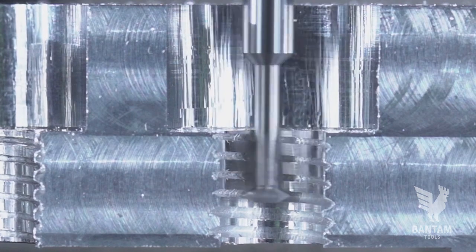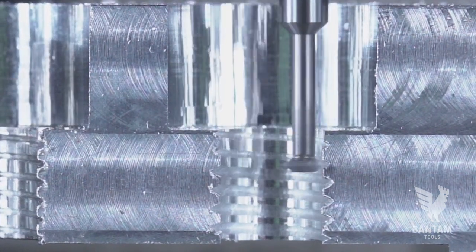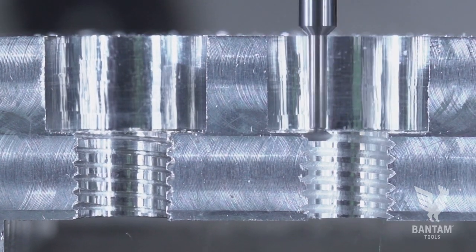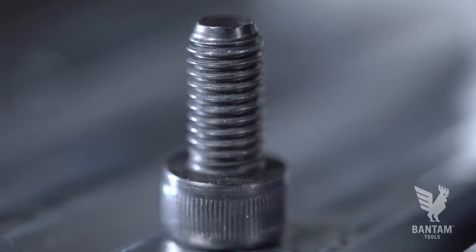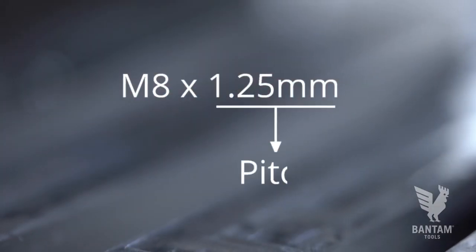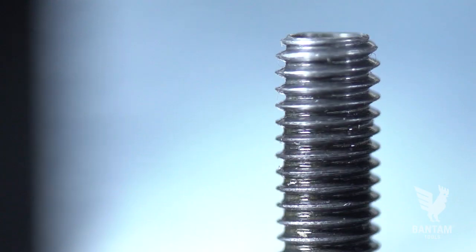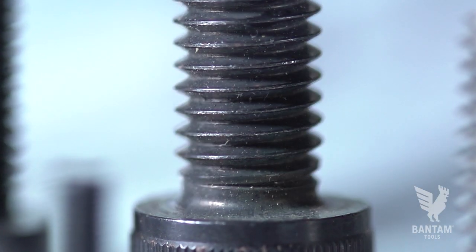In order to set up the CAM for thread milling, you'll need two important numbers. The thread pitch, which is straightforward and you'll take right from the fastener that you're using. In this case, it's an M8 by 1.25mm, so 1.25mm is our pitch.